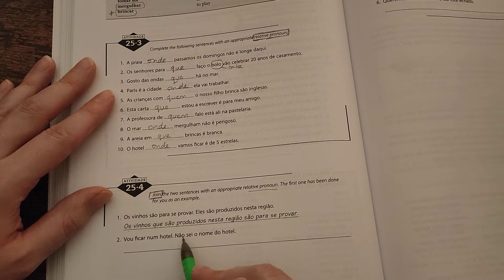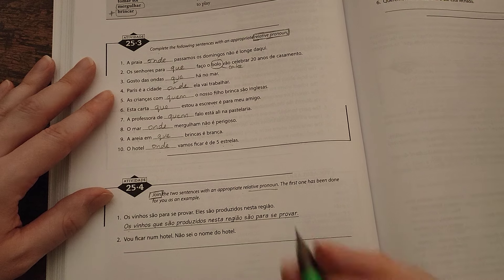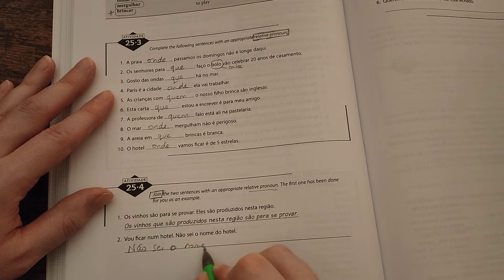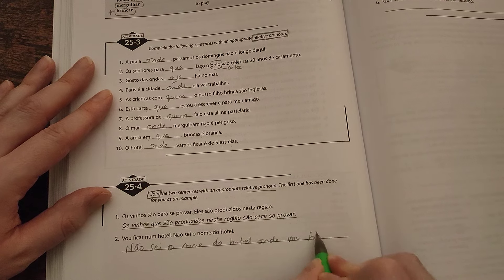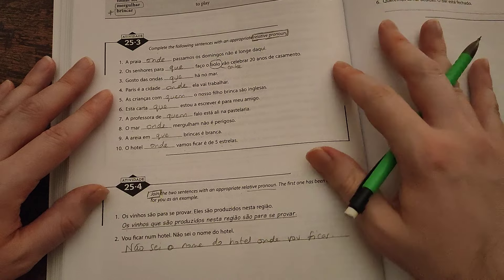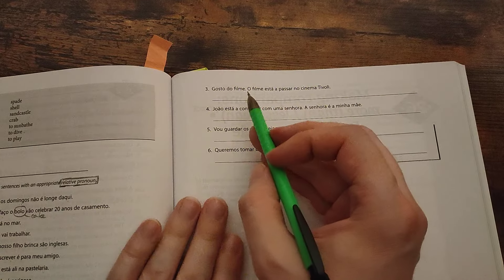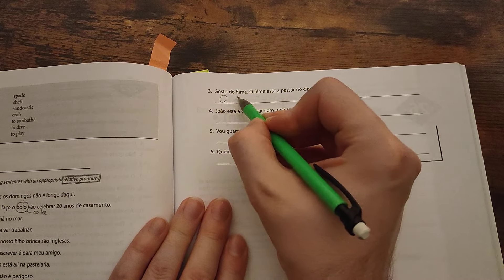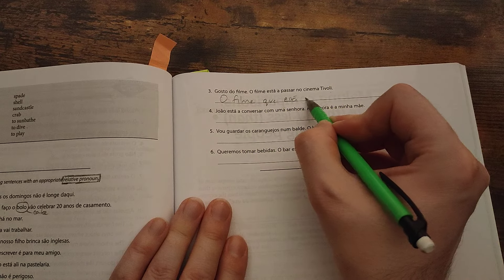Vou ficar num hotel. Não sei o nome do hotel. Não me lembro do nome do hotel onde vou ficar. I don't know the name of the hotel where I'm going to stay. Gosto do filme. O filme está a passar no cinema Tivoli.